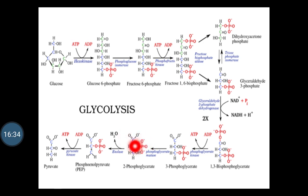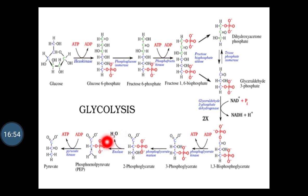Step 9 is the dehydration of 2-phosphoglycerate. In this step, 2-phosphoglycerate is dehydrated — the water molecule is removed — by the action of enolase, that is phosphopyruvate hydratase, to form phosphoenolpyruvate. This is an irreversible reaction where 2 moles of water are lost.